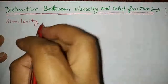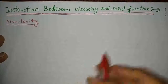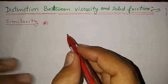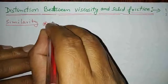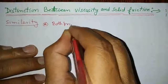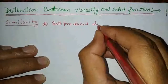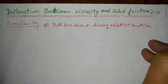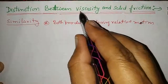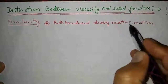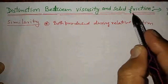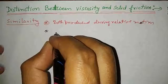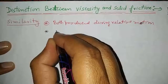The first similarity between viscous force and friction force is that both are produced during relative motion. Viscous force is produced due to relative motion between liquid layers, and similarly, solid friction force is produced due to relative motion between solid surfaces.